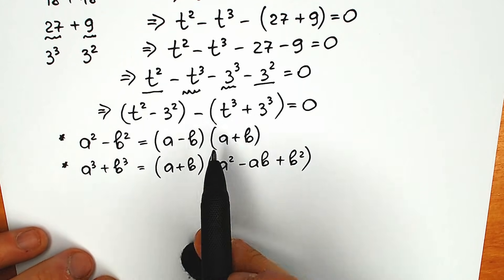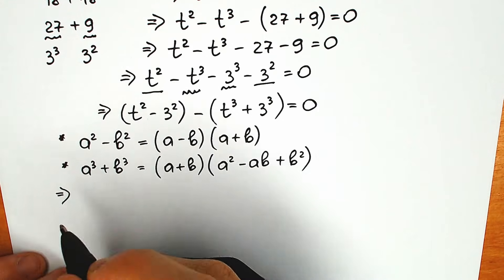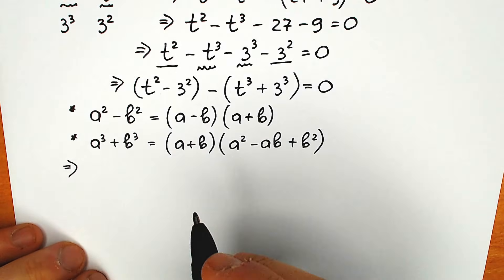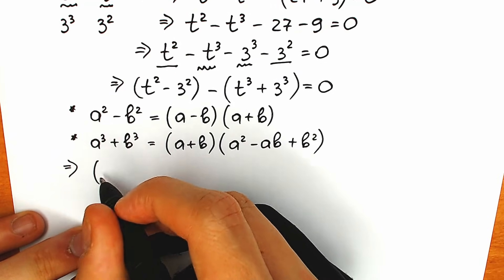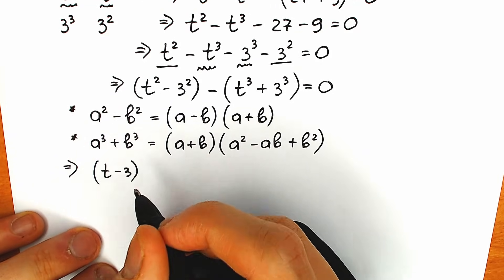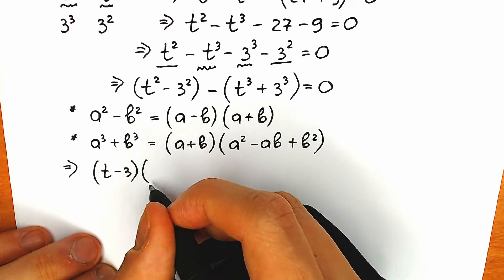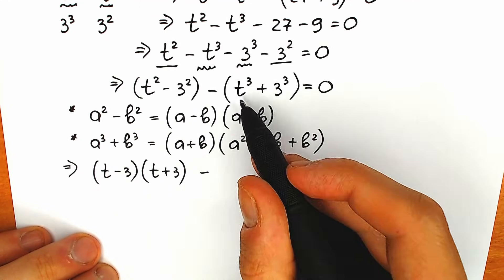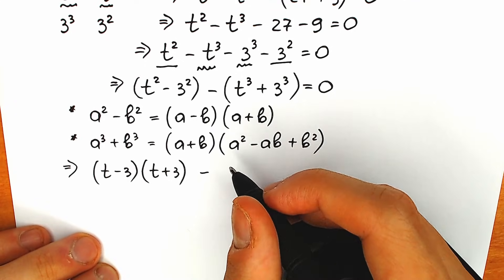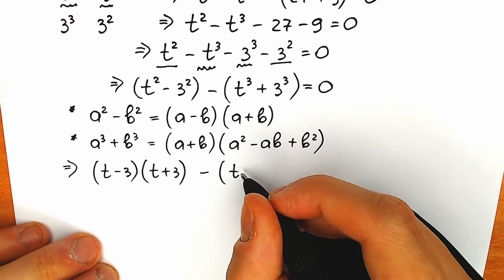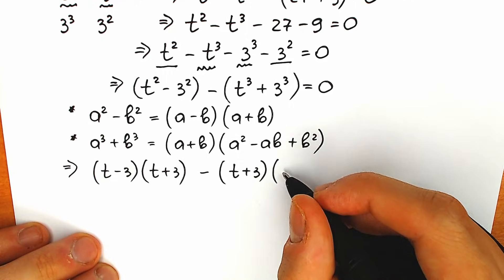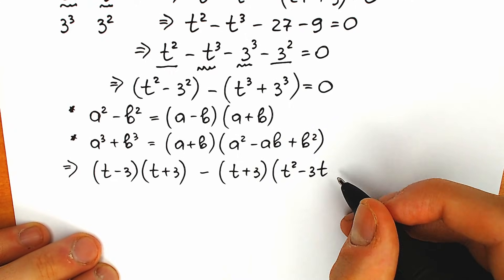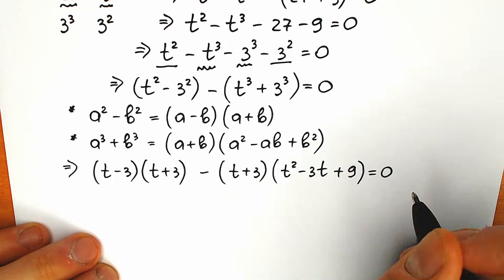Now let's apply these formulas. For the difference of squares, we get (t minus 3)(t plus 3). Then we have minus the sum of two cubes: (t plus 3)(t squared minus 3t plus 9), equal to zero.